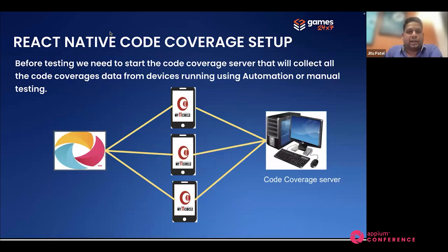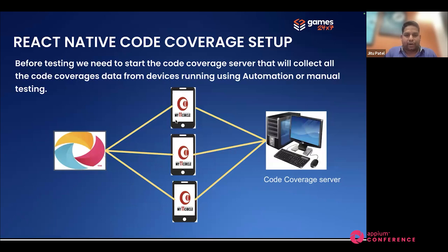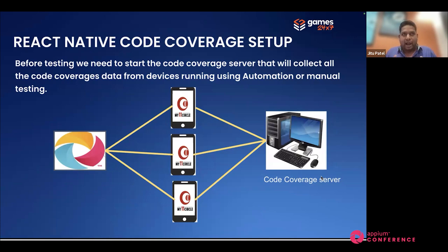How are we collecting the coverage data? I have an automation suite with 200 test cases running in parallel on multiple phones. When we start automation, it triggers on multiple phones and when each task is complete, it throws all coverage data to the code coverage server. I run a coverage server at the same node or a different node — that node receives the application's information about who is testing, what is being collected, and the coverage data is thrown to the code coverage server. That is the architecture flow of how we implemented it in our company.